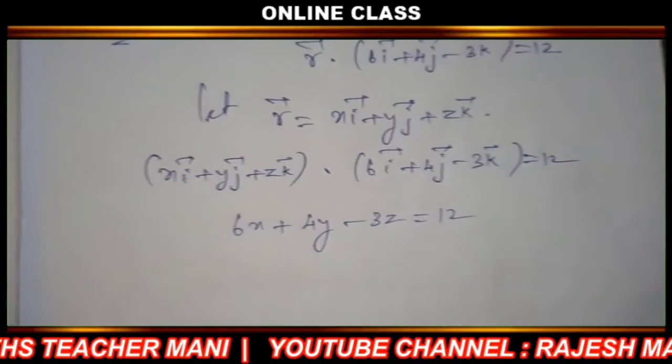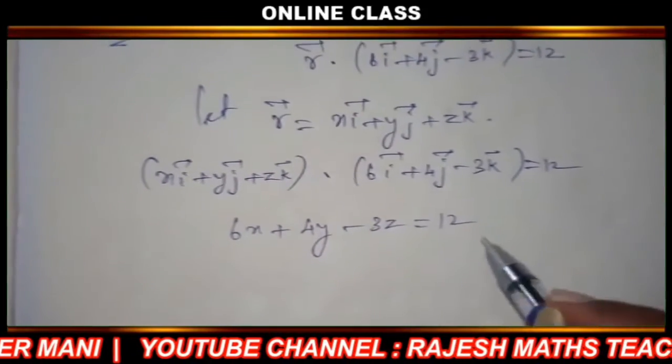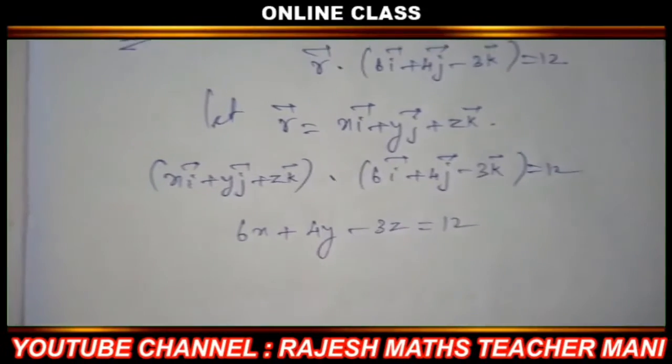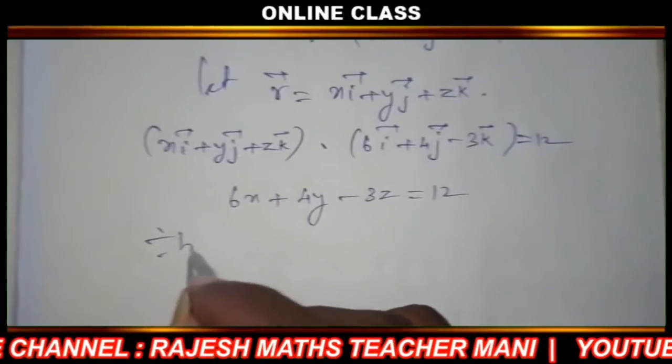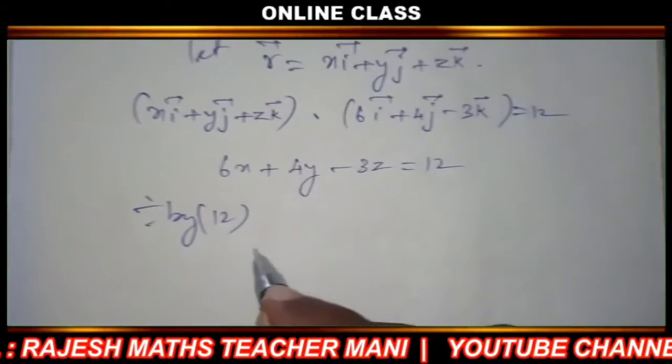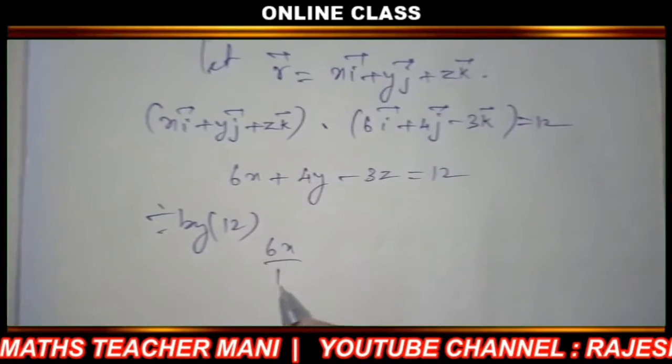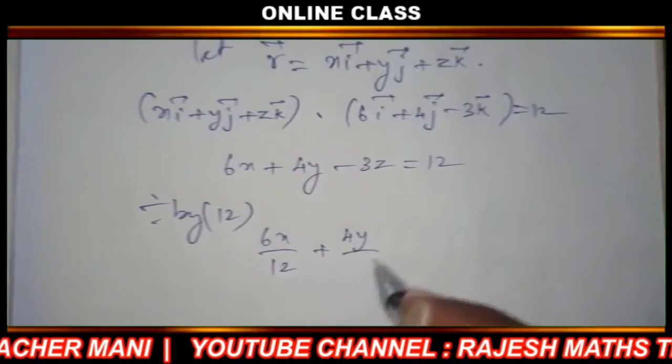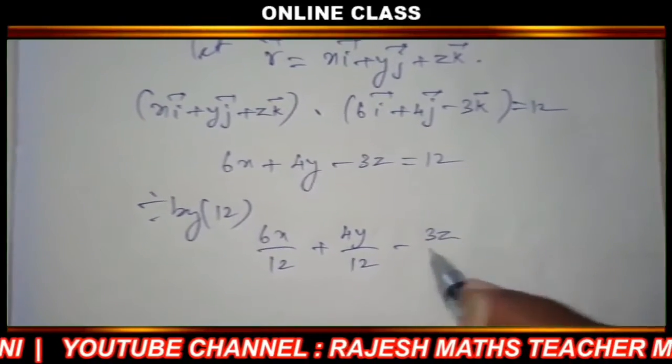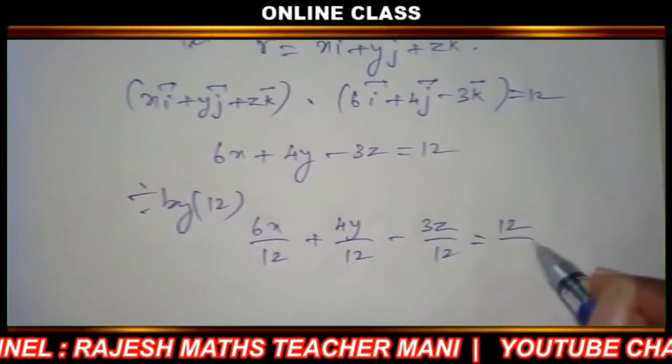We will divide by 12: 6x by 12 plus 4y by 12 minus 3z by 12 equal to 12 by 12.